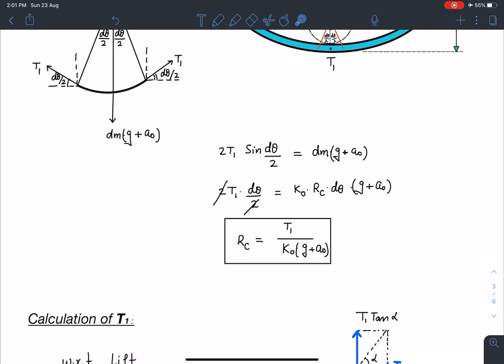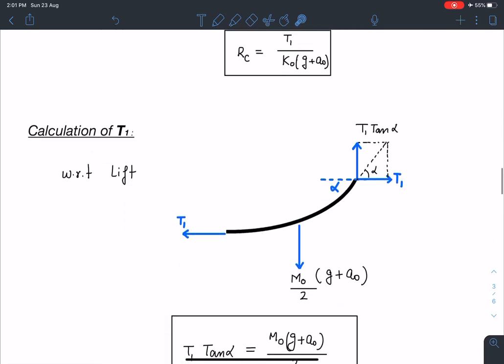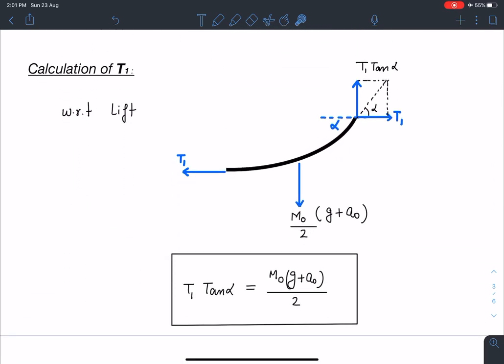So in order to calculate now the tension T1 here, I will take the free body diagram of the half part of the chain. And here if this tension is T1, definitely at the support, this tension must be T1 because the string is in equilibrium. And this vertical tension component, if this angle is alpha here, this angle is also going to be alpha.